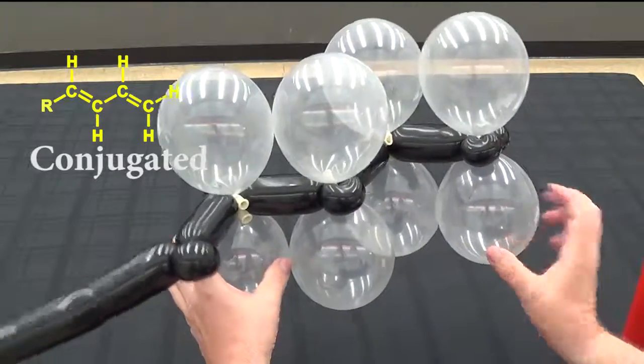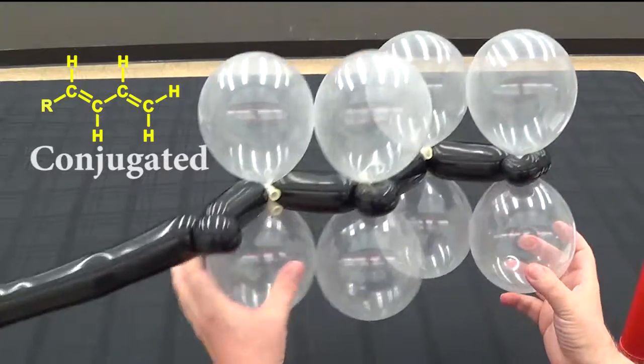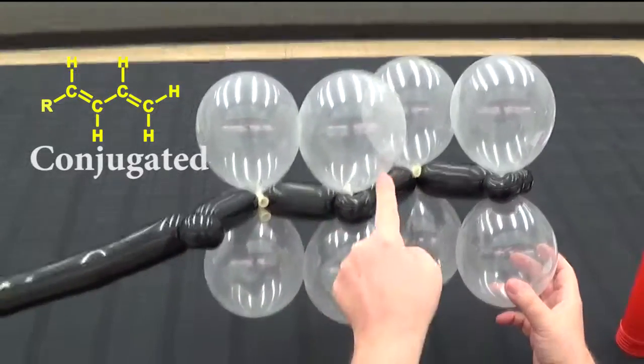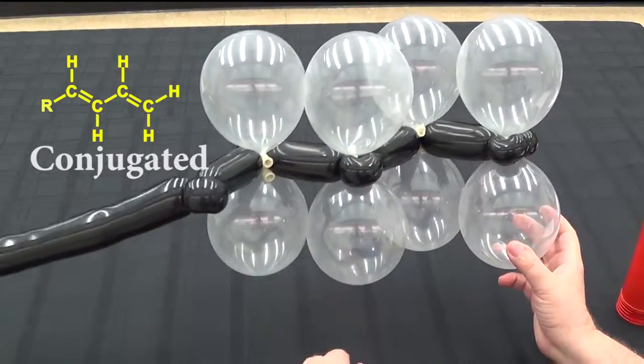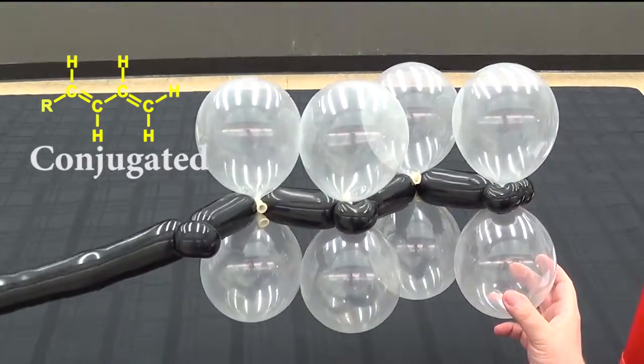And now students can see that the orbitals continuously overlap in a pi conjugate circuit. So in a conjugated system, we see this continuous orbital interaction. And you can easily transfer this back and forth to show isolated and conjugated. And that's all there is to it.